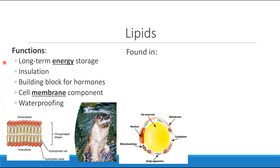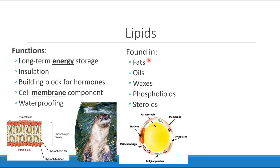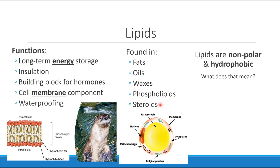All of these different functions are done by different types of lipids, and there are many types of lipids that we see. The general term that you'll think of when you hear lipids are our fats. Our fats come in various forms. We'll talk about the fatty acids that build these lipids. Other things considered lipids are things like oils or waxes, phospholipids, and finally steroids. Regardless of which specific kind of lipid we're talking about, all lipids are considered non-polar and hydrophobic.